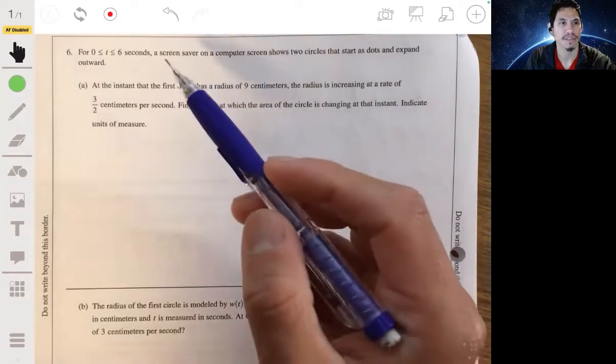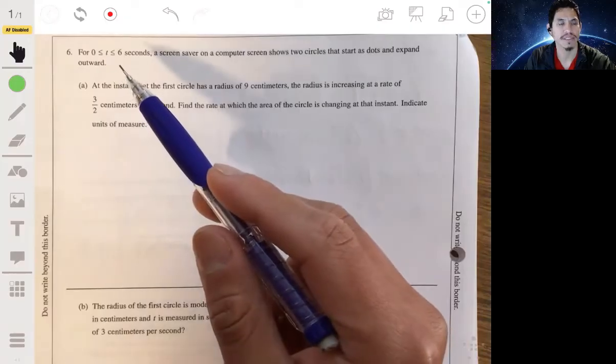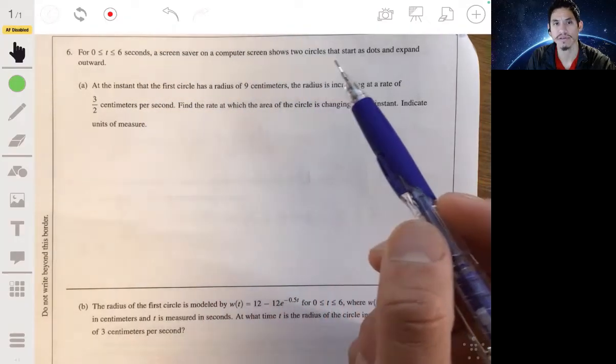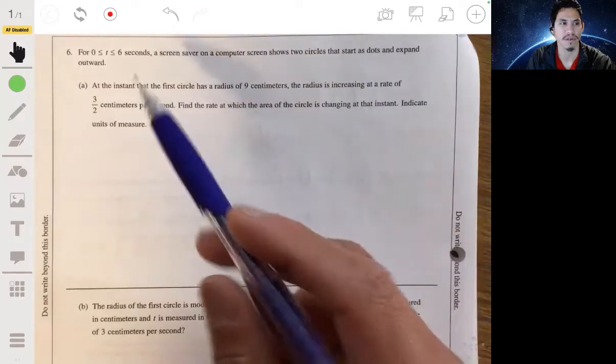All right, in problem six, it says that from zero to six seconds, a screensaver on a computer screen shows two circles that start as dots and expand outward.